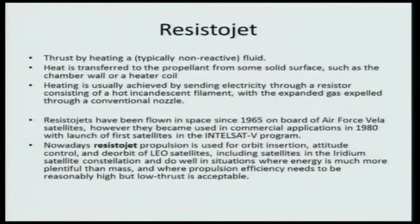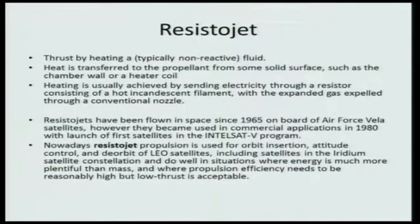Next, let us talk about the resistor jet. A resistor jet uses an electrical heater to heat up the fuel. Thrust is produced by heating a fluid — typically a non-reactive fluid. Heat is transferred to the propellant from a solid surface such as the chamber wall or a heater coil. Heating is achieved by sending electricity through a resistor — a simple electric coil. Because of this heating, the propellant gets converted into gas beyond its boiling temperature, and that gas is expelled through a conventional nozzle.